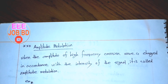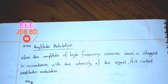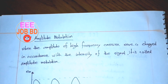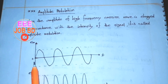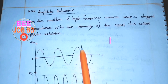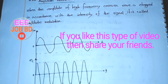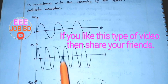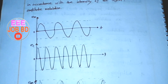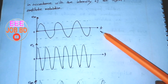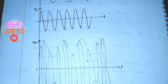Amplitude modulation is when the amplitude of a high-frequency carrier wave is changed in accordance with the intensity of the signal. In amplitude modulation we have three signals: the message signal, the carrier signal, and the modulating signal. The output is the modulated signal.